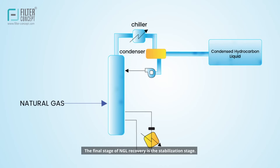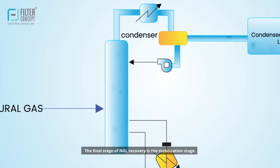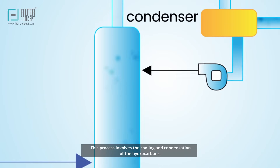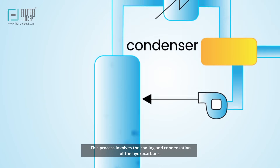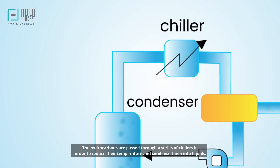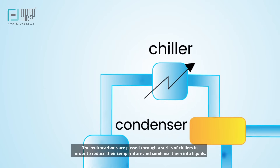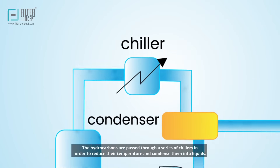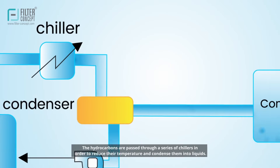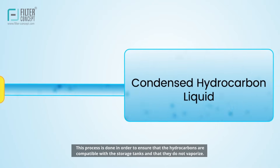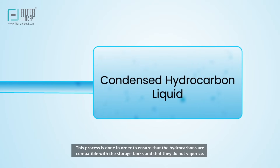The final stage of NGL recovery is the stabilization stage. This process involves the cooling and condensation of the hydrocarbons. They are passed through a series of chillers to reduce their temperature and condense them into liquids, ensuring they are compatible with storage tanks and do not vaporize.